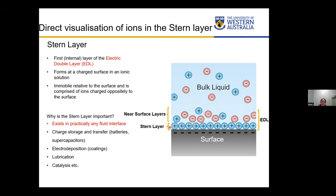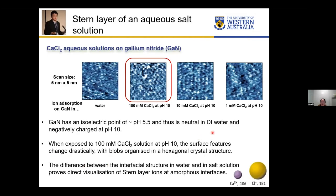The stern layer is very important because it exists at almost all liquid interfaces. It is important for charge storage and transfer for applications such as batteries and supercapacitors, as well as electrode deposition, lubrication, and catalysis. First, let's see the morphology of the stern layer of aqueous calcium chloride solution on a gallium nitride surface. This project is in collaboration with Dr. Jianan Wang and Professor Rob Atkin at UWA.